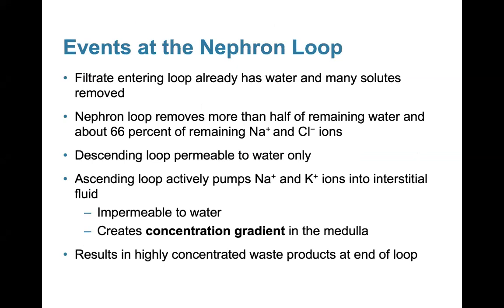During the nephron loop, filtrate entering the loop already has water and many solids removed. The nephron loop removes more than half of the remaining water and about 66 percent of the remaining sodium and chloride ions. The descending loop is permeable to water only. The ascending loop actively pumps sodium and potassium ions into the interstitial fluid and is impermeable to water, creating a concentration gradient in the medulla. This results in highly concentrated waste products at the end of the loop.